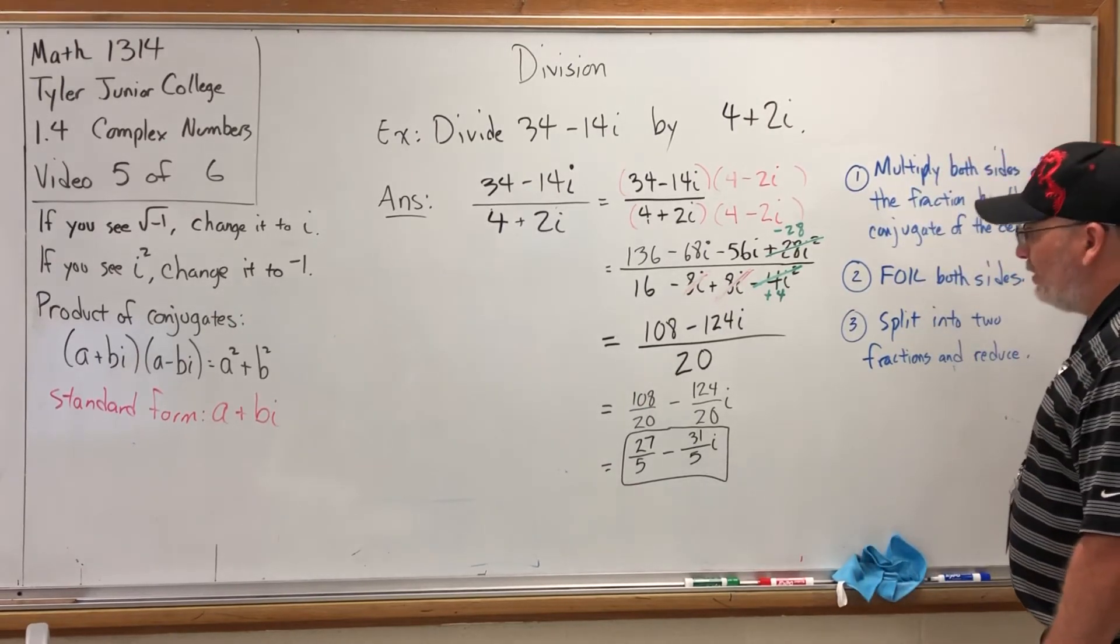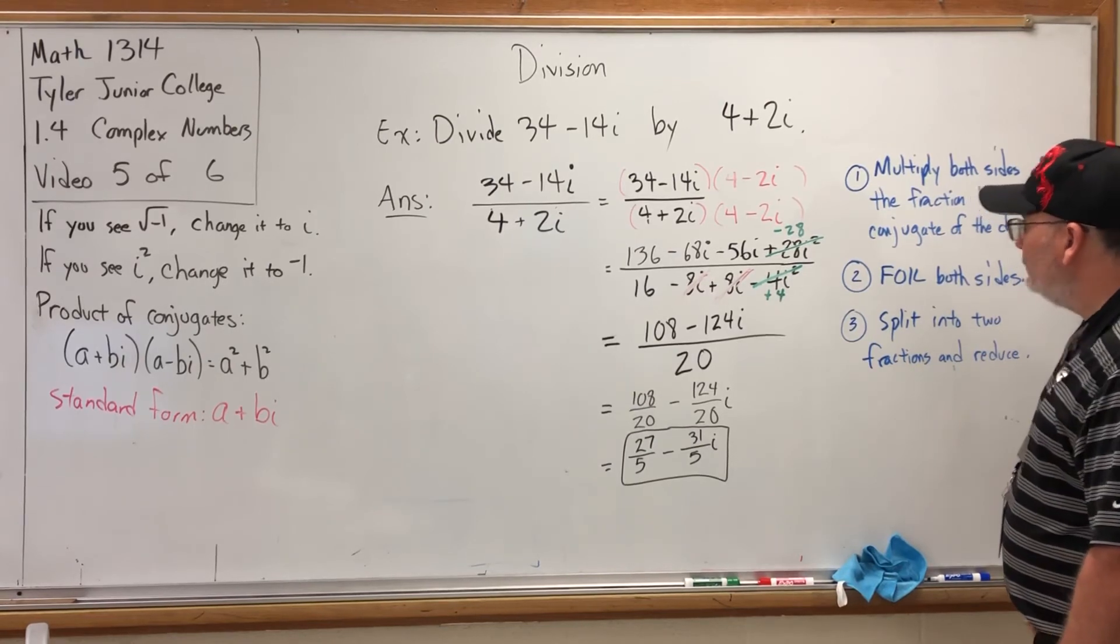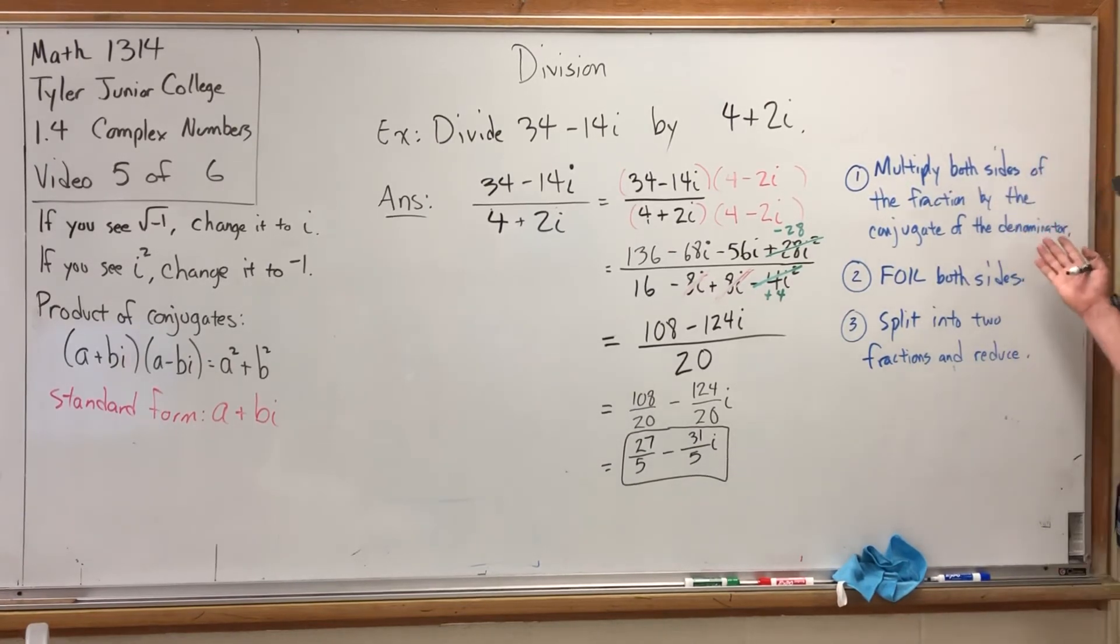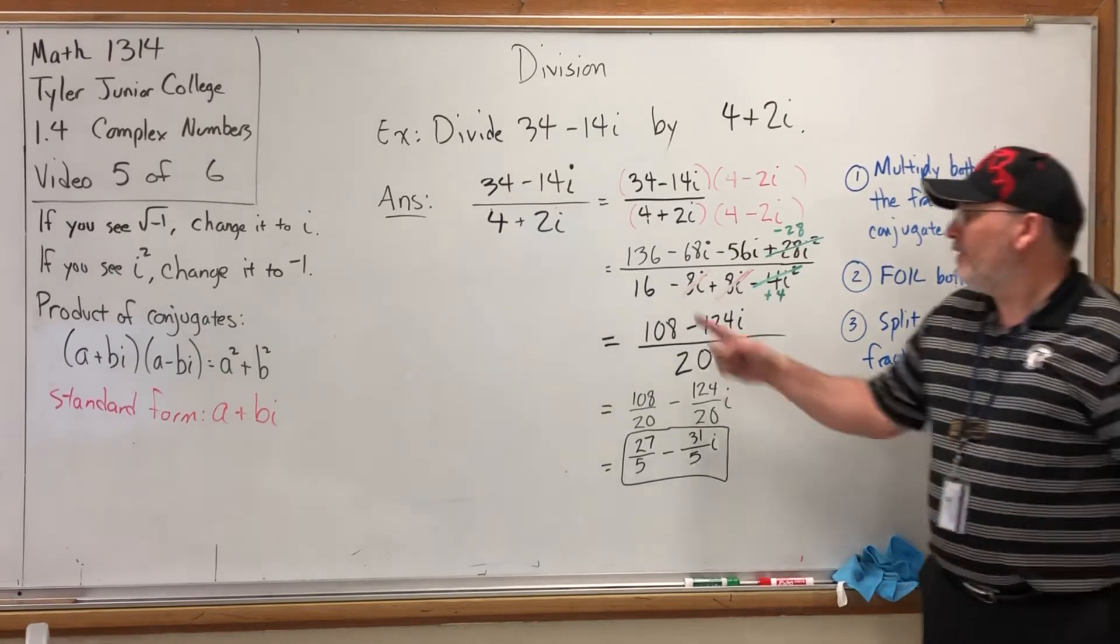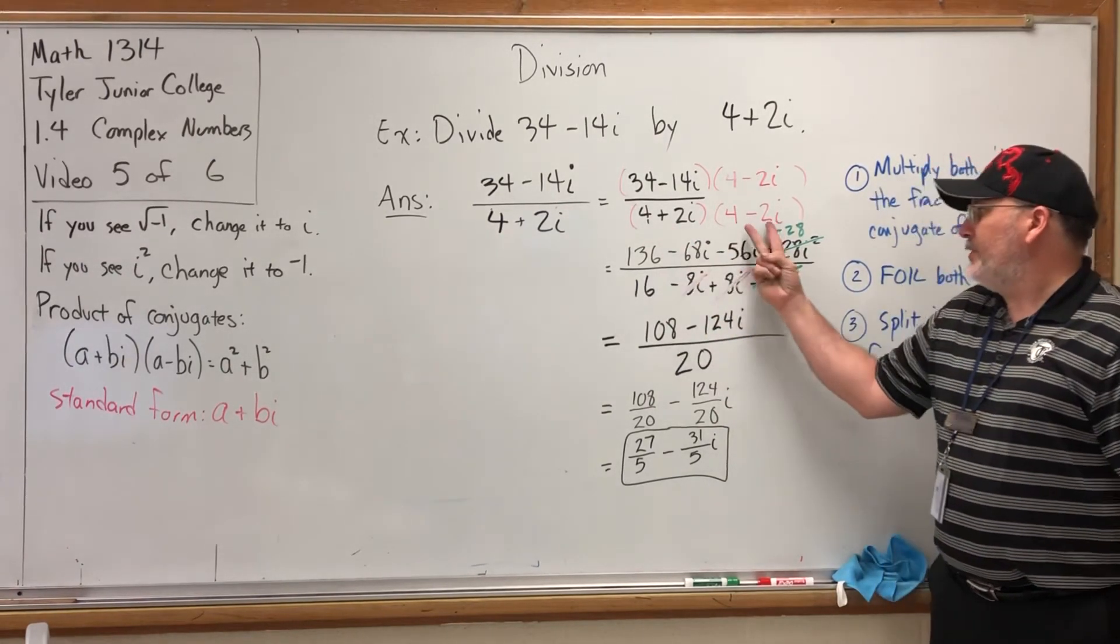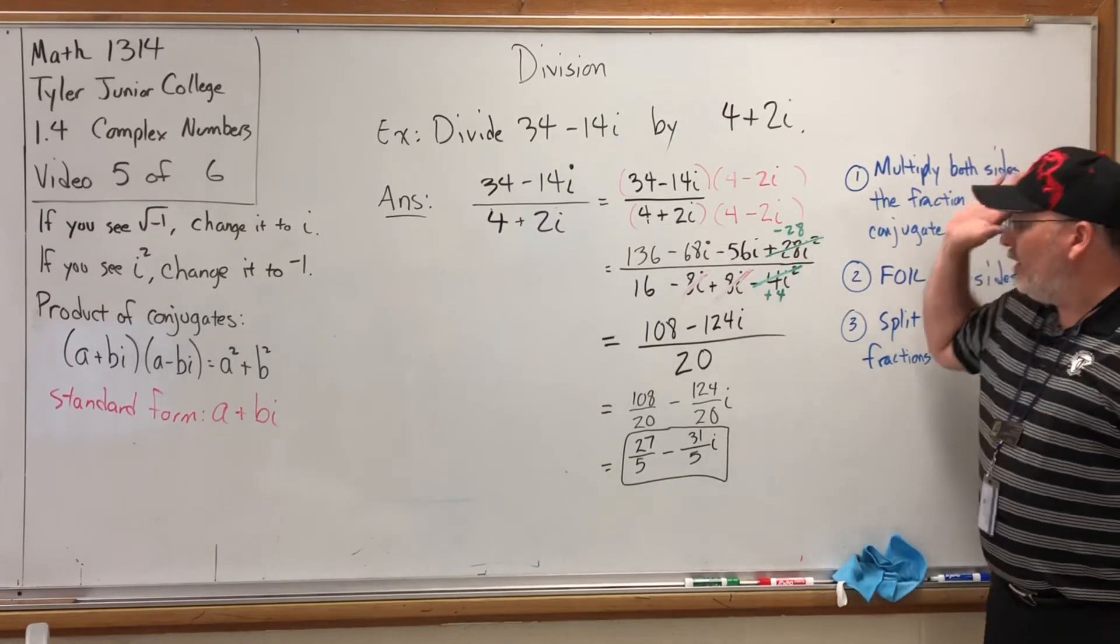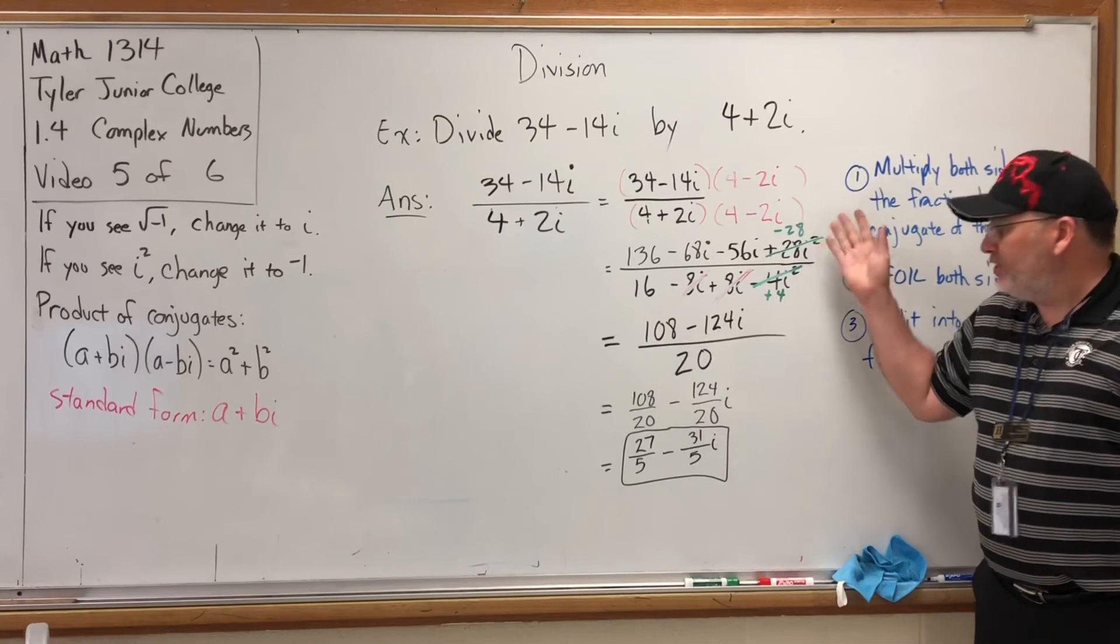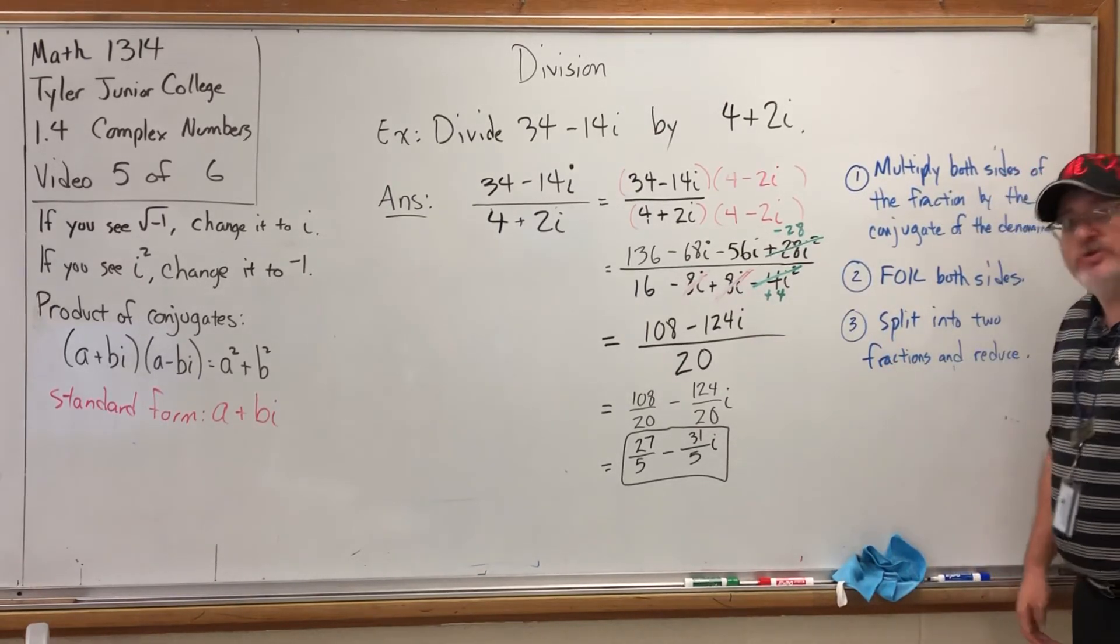To divide two complex numbers, you set up a fraction, then multiply both sides of the fraction by the conjugate of the denominator. Translation: change the sign in the middle, hit the bottom with that, but also hit the top.